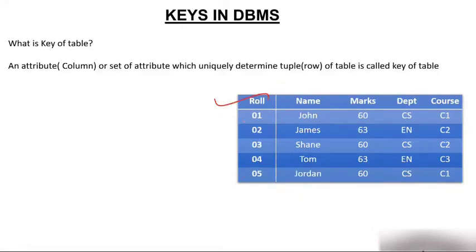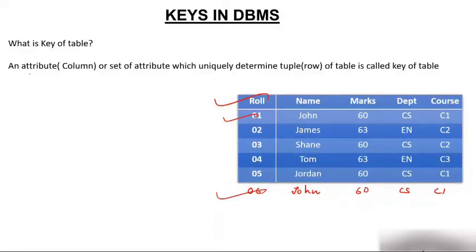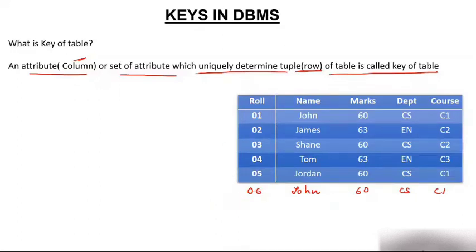So you added one column — the column name is Roll Number. Now if somebody asks for information about John, you ask which roll number. If I say roll number one, this John is entirely different, and if I say roll number six, that John is entirely different. So the definition: an attribute or set of attributes which uniquely identifies a row (tuple) of a table is called the key of a table. Roll Number is a key attribute because it uniquely determines the entire tuple.